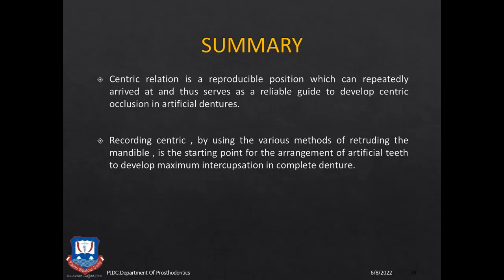In summary, Centric Relationship is a reproducible position which can be repeatedly arrived at, and this serves as a reliable guide to develop Centric Occlusion in artificial dentures. When centric relationship records are taken and transferred to the articulator, the mounted models allow tooth setting to be done. Recording centric using various methods of retracting the mandible is the starting point for arrangement of artificial teeth to develop maximum intercuspation in complete dentures. Thank you all for your patient hearing — I'll see you again with another lecture.